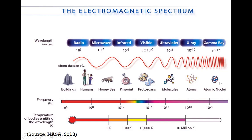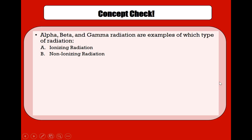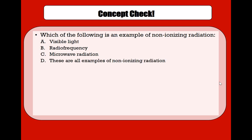Let's do a quick concept check. Alpha, beta, and gamma radiation are examples of which type of radiation? Ionizing radiation — very good. Which of the following is an example of non-ionizing radiation? All of the listed options are examples of non-ionizing radiation. The answer is D. Thank you.